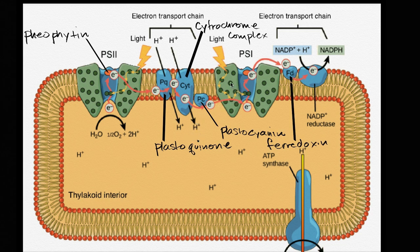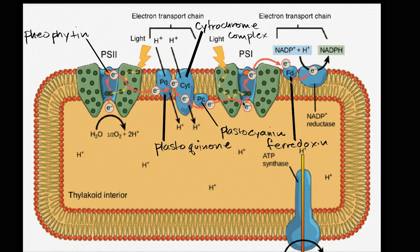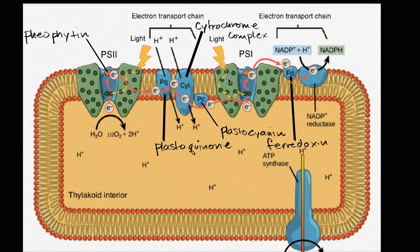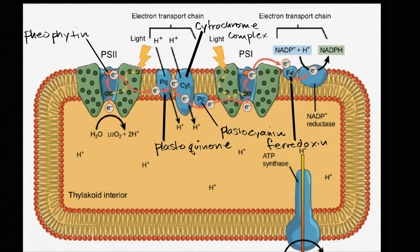And then as we go to photosystem one, that electron can be transferred from the plastocyanin to the chlorophyll pair, the P700 chlorophyll, that can get excited again. Once again, it doesn't have to be the light directly exciting it, it can be exciting other molecules within photosystem one, but that energy eventually gets transferred to that chlorophyll, excites its electrons, and then it goes from one molecule to another, eventually gets to ferridoxin.